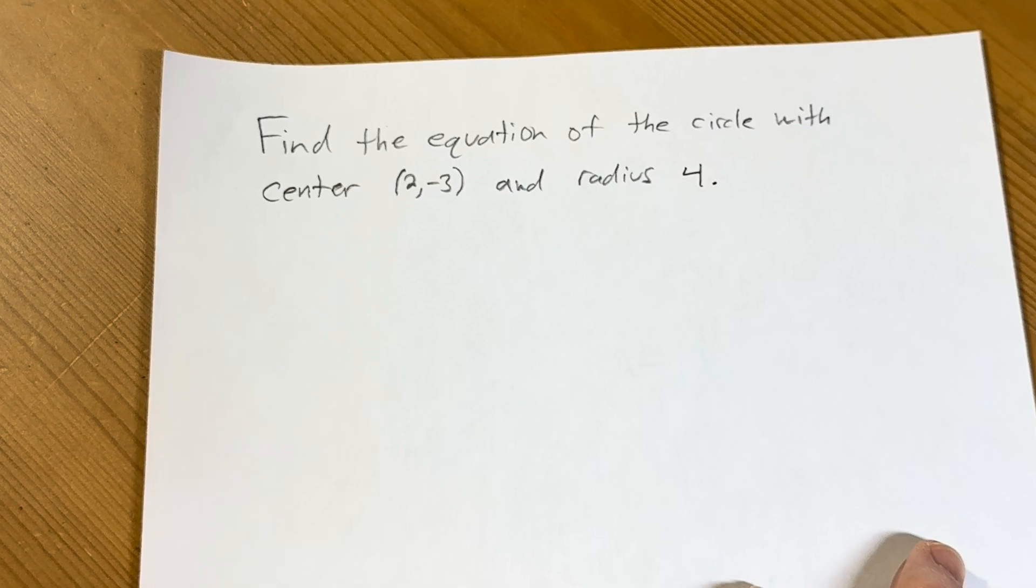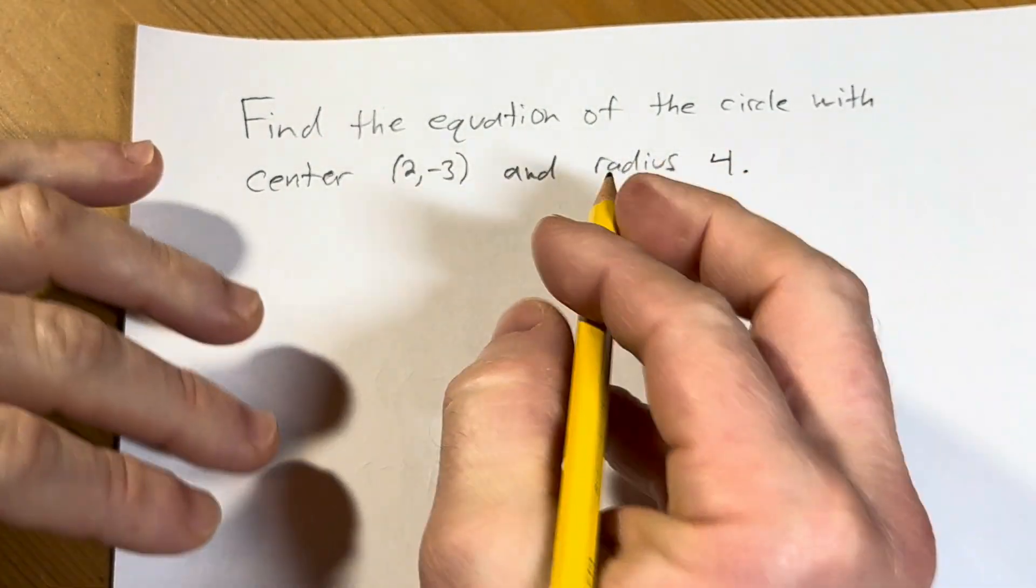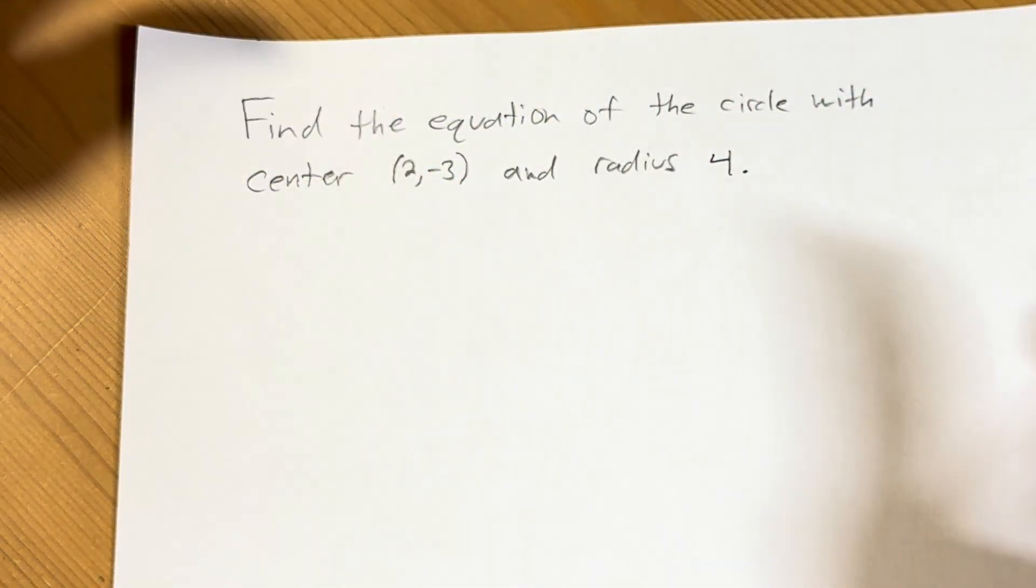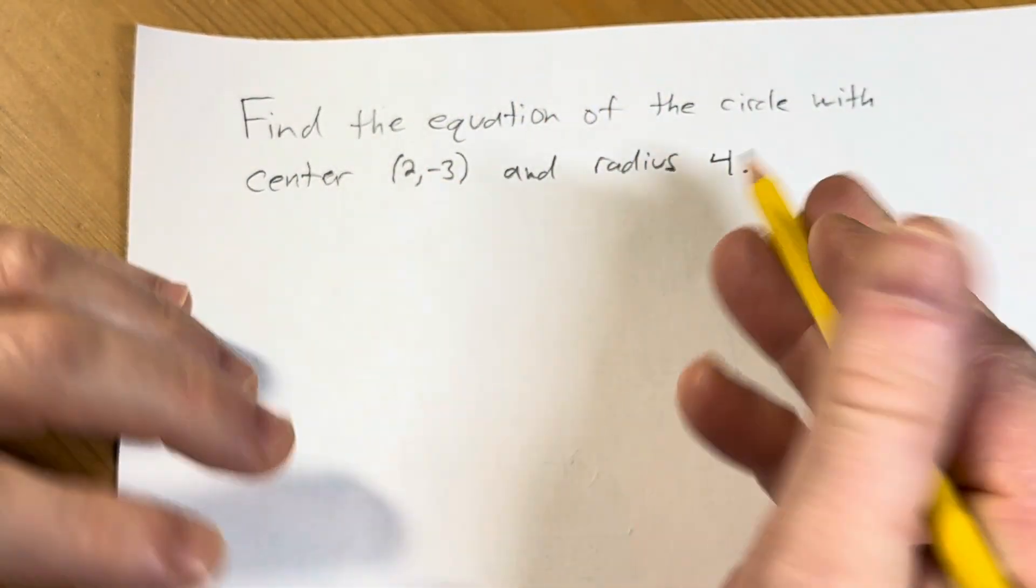We're given the center and radius and we have to find the circle. This is probably the easiest type of question you can do when it comes to finding the equation of the circle because all you have to do is know the formula. So let's go ahead and go through it.